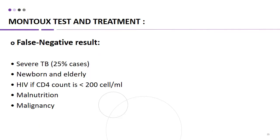False negative results can also occur — this means the disease is present but the test is showing a negative result. In severe TB, 25% of cases may show false negative results. False negatives also occur in newborns and the elderly due to low immunity, HIV patients with CD4 count less than 200 cells per ml, malnourished patients, and patients with malignancy.